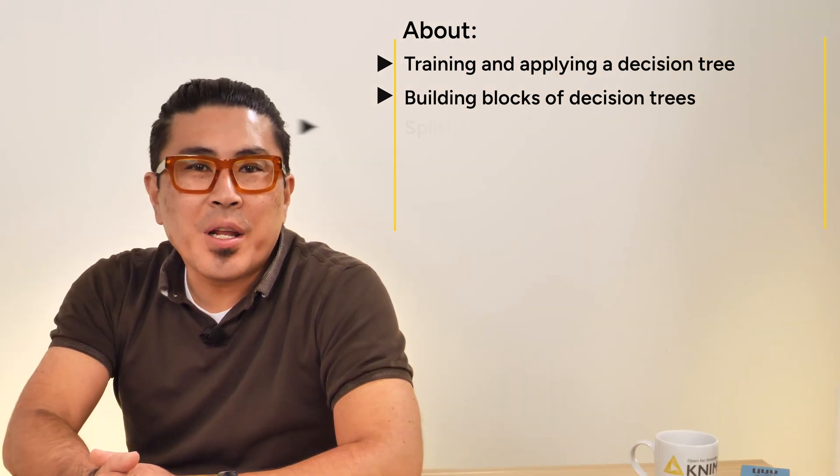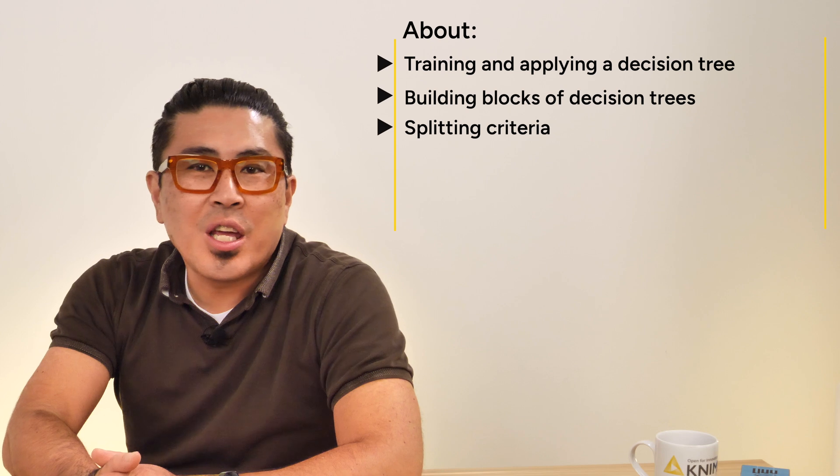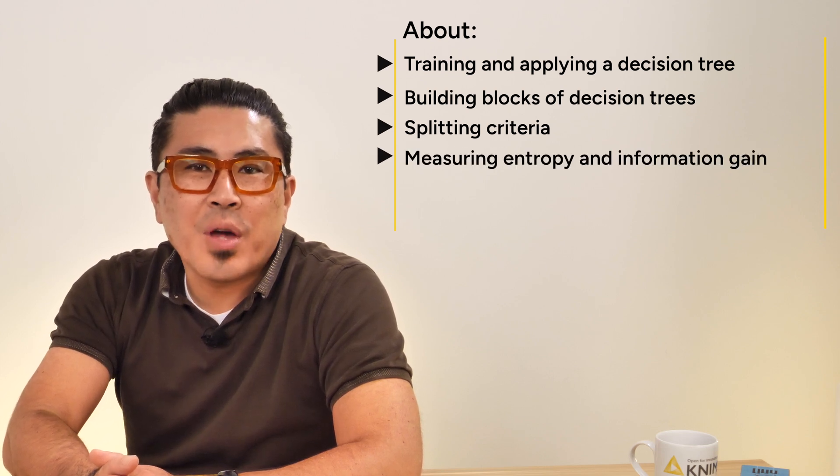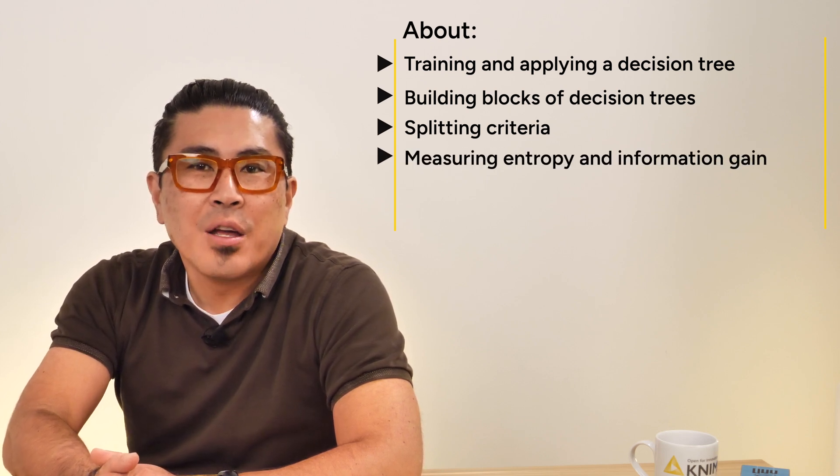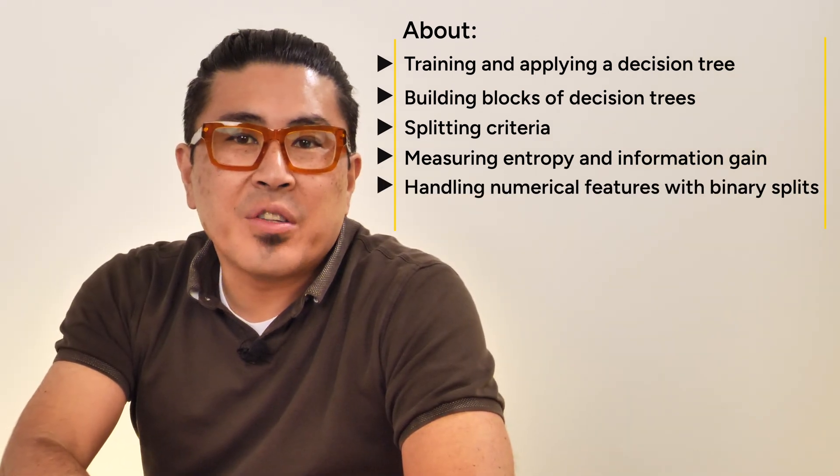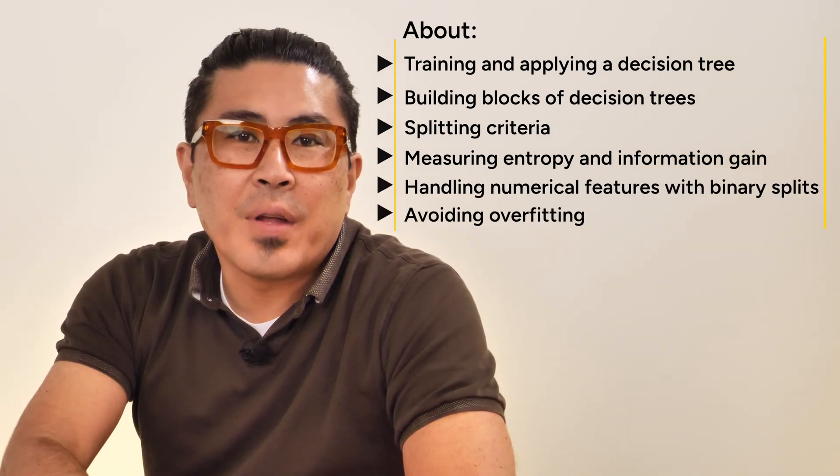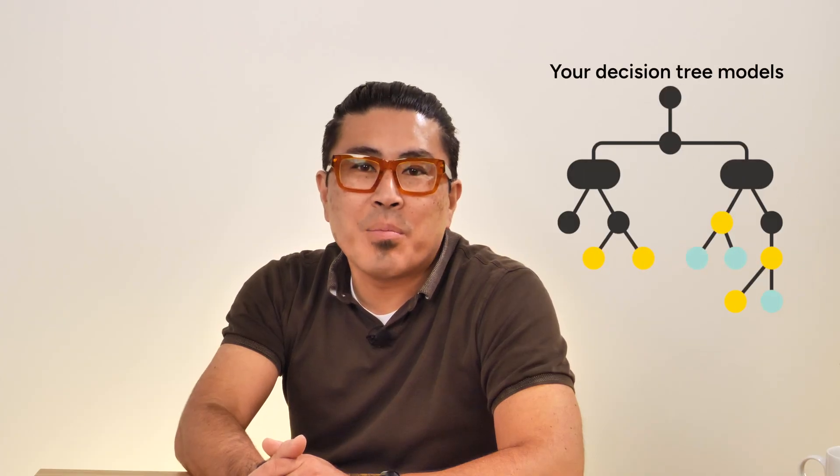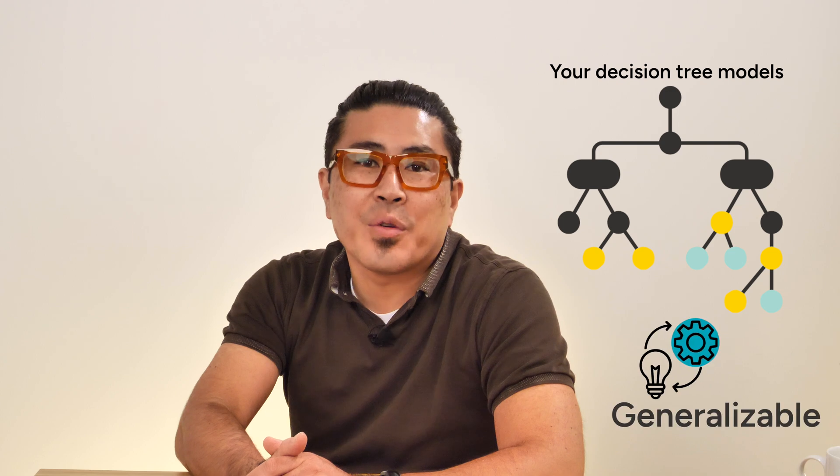You learned about splitting criteria such as the Gini index and gain ratio, and how to measure entropy and information gain to determine the best splits, handling numerical features with binary splits, and how to avoid overfitting through pruning and early stopping. These techniques ensure that your decision tree models are both accurate and generalizable.